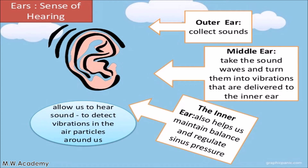Number three: ears. Ears give us a sense of hearing. Ears help us to know what sounds are around us — like heavy music, soft music, traffic sounds. Every sound around us is detected by our ears, whether it is music, traffic, pleasant sounds, or loud sounds.